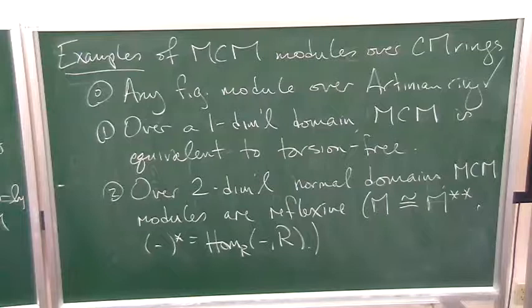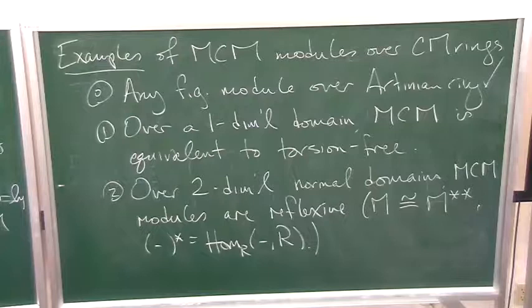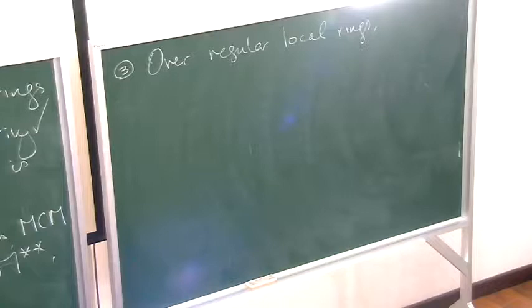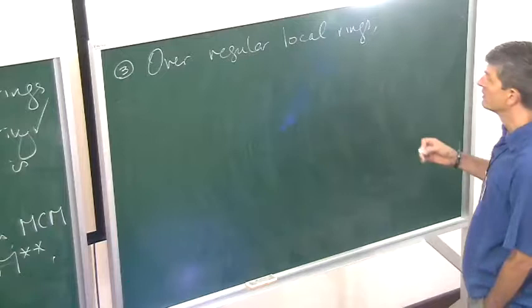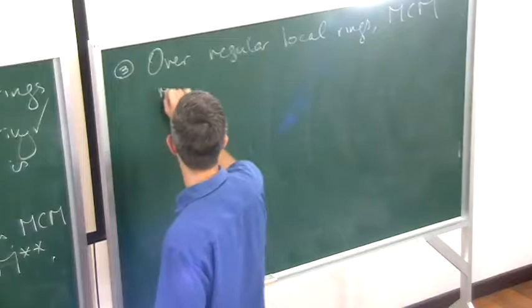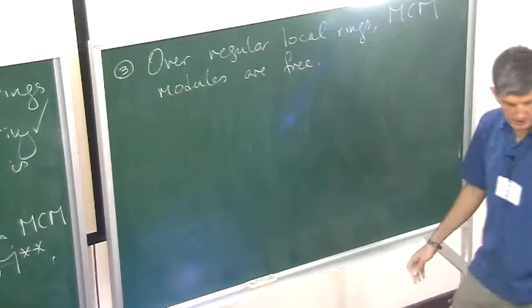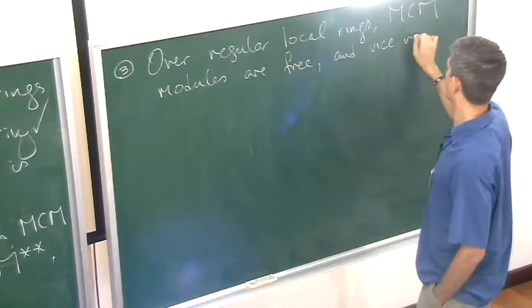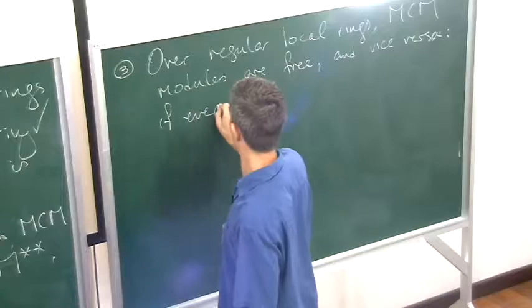How about example three, regular local rings? This is where something interesting actually starts to happen. This is where we start to see one reason for studying Cohen-Macaulay modules, apart from the extremal property. We see that they start to have some homological information. So over regular local rings, smooth points, Cohen-Macaulay modules are free. They're the only maximal Cohen-Macaulay modules, the free ones. And in fact, the converse holds as well. So vice versa, meaning if every maximal Cohen-Macaulay module is free, R is regular.